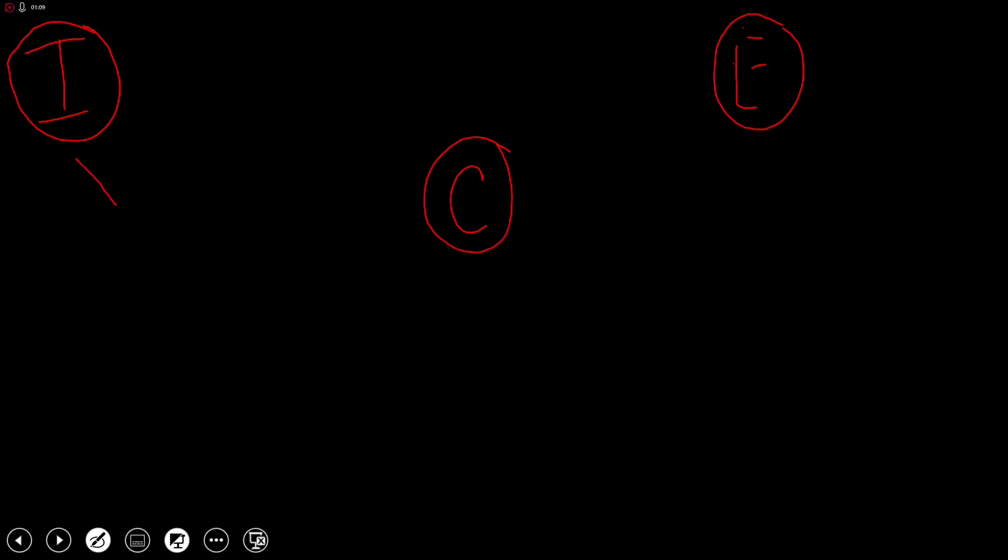We have the intrinsic pathway, the extrinsic pathway, and the common pathway. Just a quick review of the things that happen in each of these pathways. The intrinsic pathway starts with activation of factor 12, then factor 11, then factor 9, and along with cofactor factor 8, we will then activate factor 10.